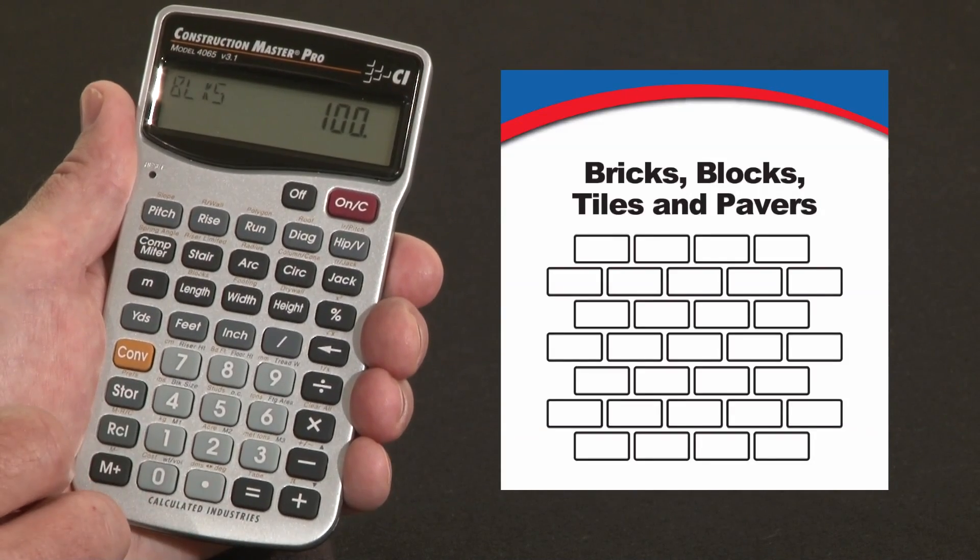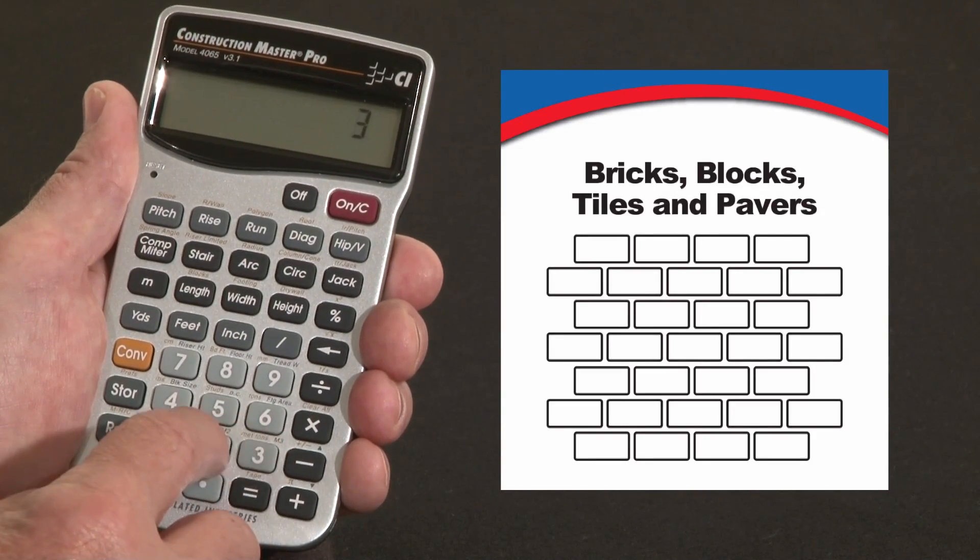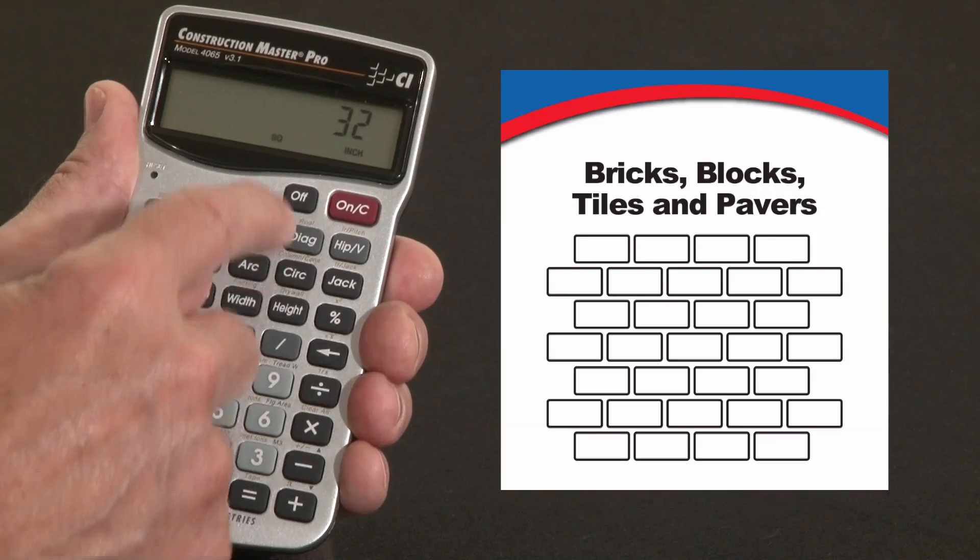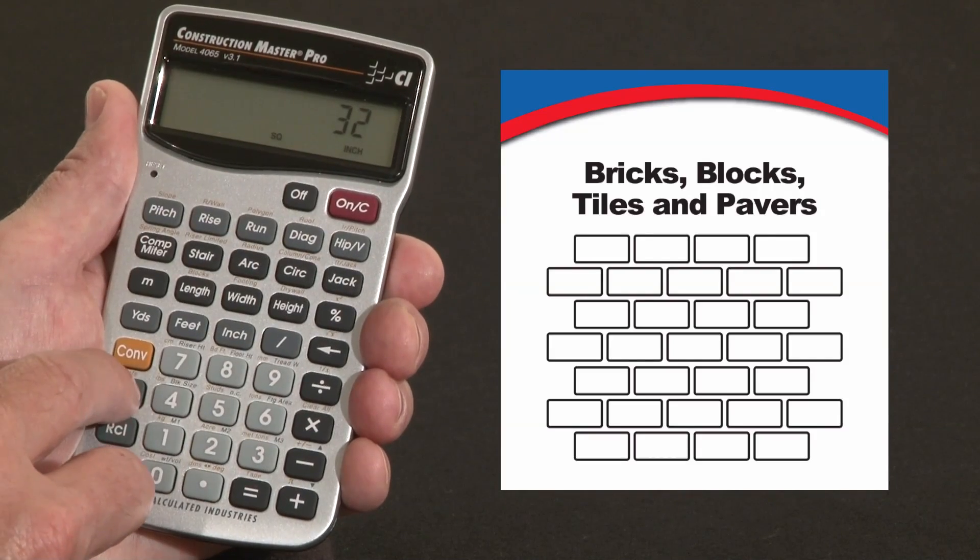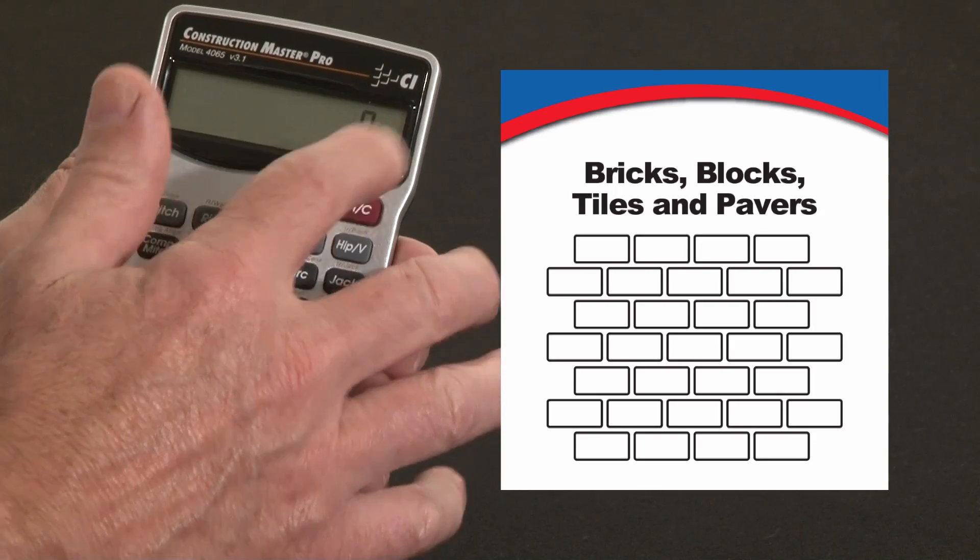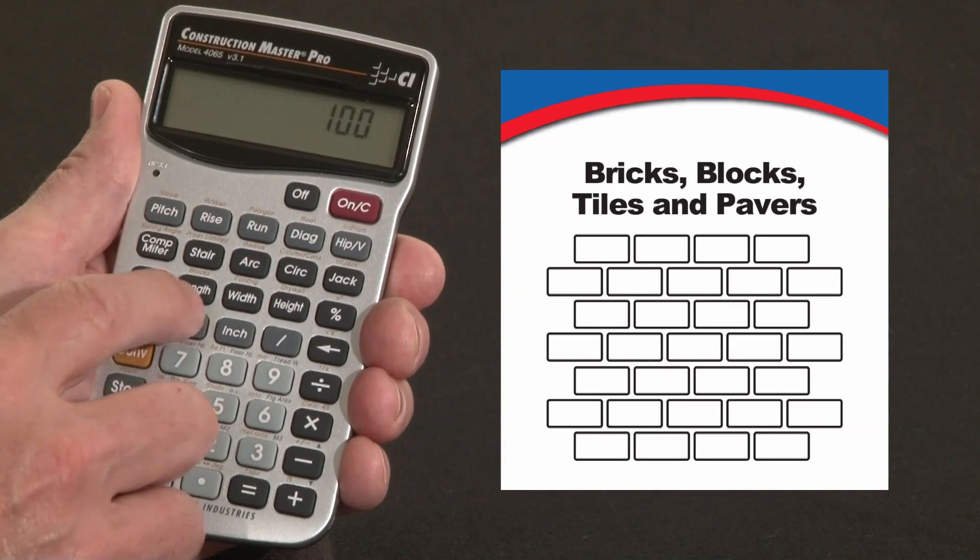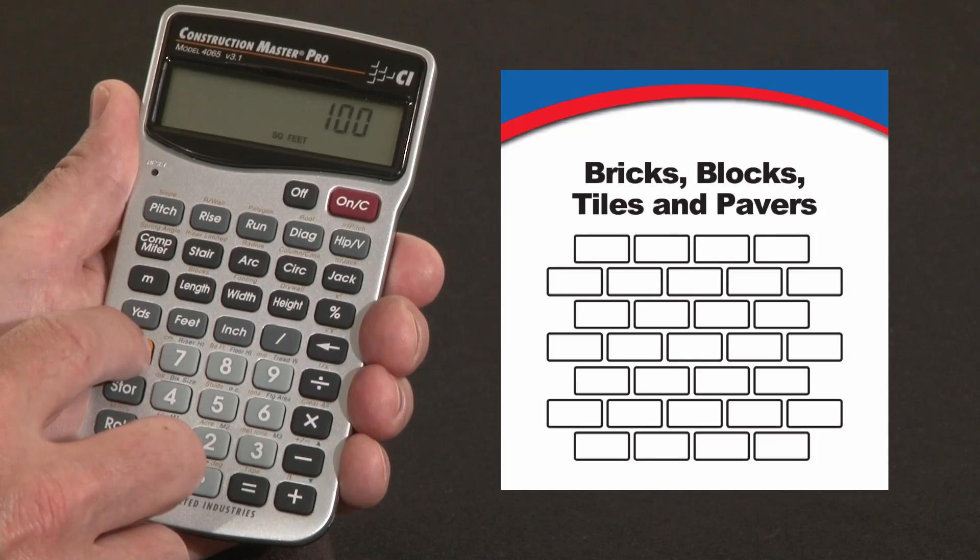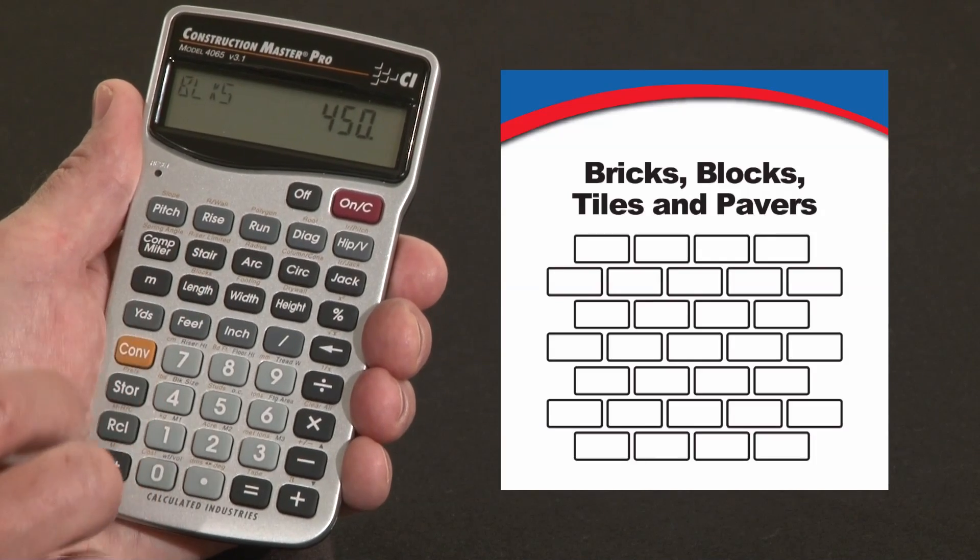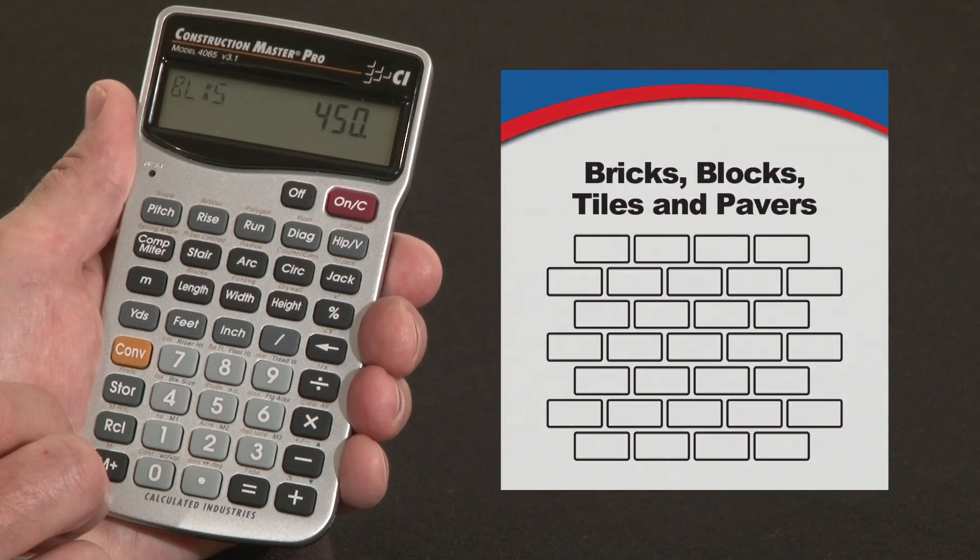If you've got pavers, for instance, you may have 4 by 8 inch pavers. You know that's 32 square inches, so you can just enter that directly, 32 square inches. Let's store that as our block area. Now that's stored, that's a paver size. And again, so if this is a 100 square foot patio, 100 feet, convert to blocks, you're going to need about 450 of those 4 by 8 inch pavers to cover that patio.